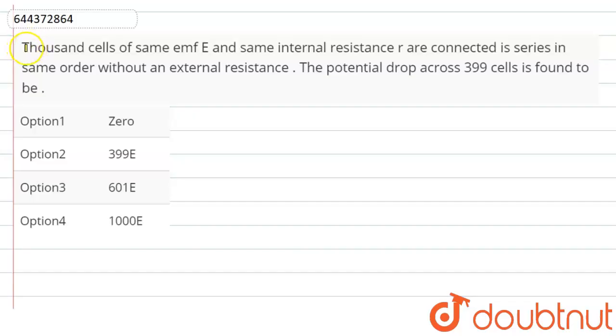So in this video we are going to solve this question: thousand cells of same emf E and same internal resistance r are connected in series in same order without an external resistance. The potential drop across 399 cells is found to be...